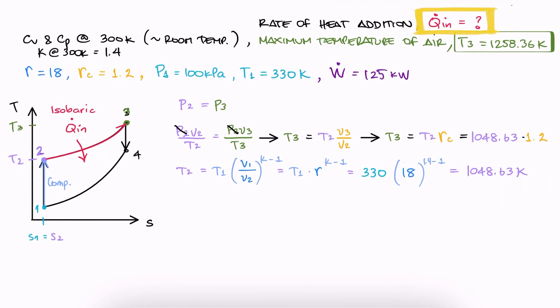Now, for the heat transfer rate, we know that efficiency is work net out over heat in, so heat in is work out over efficiency. We didn't get the efficiency from the problem statement, but we can calculate it.